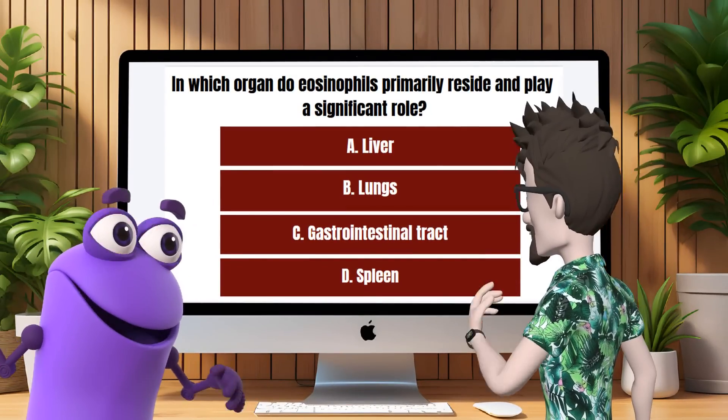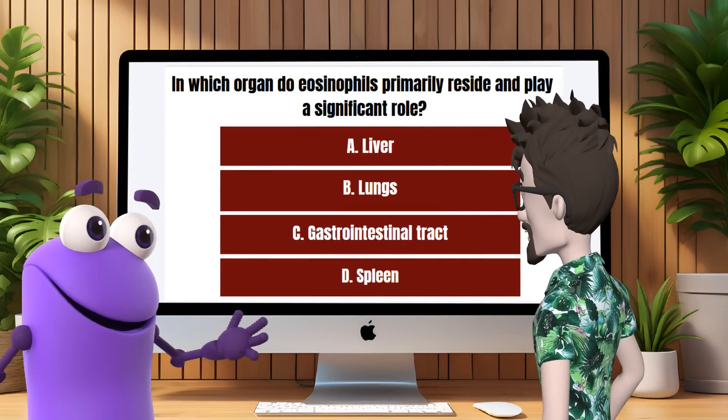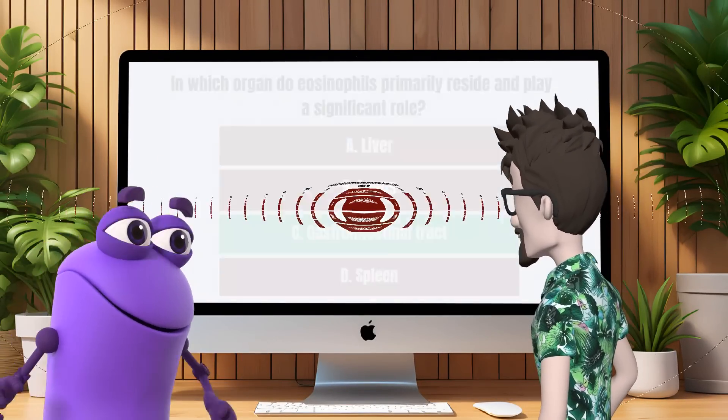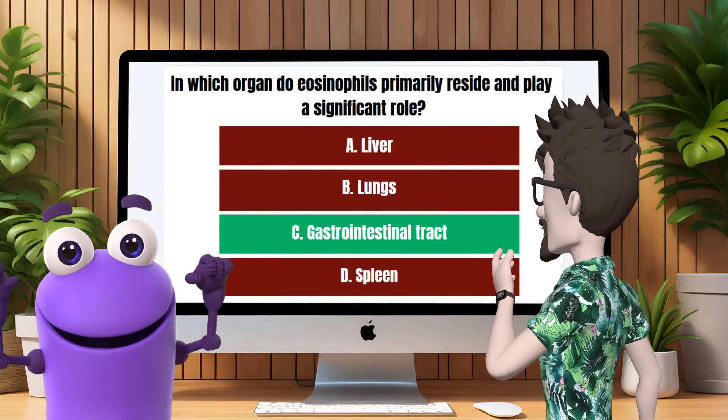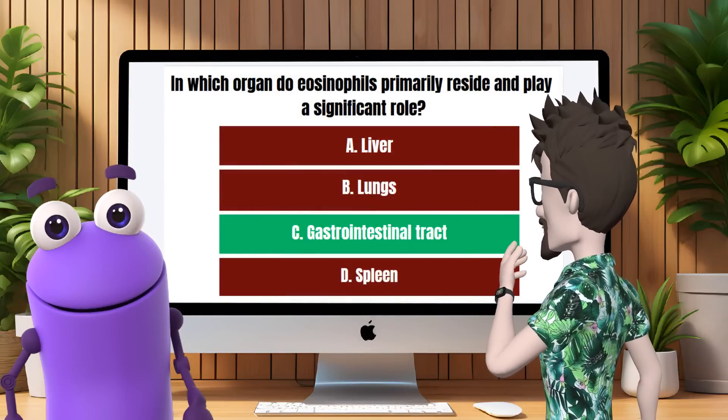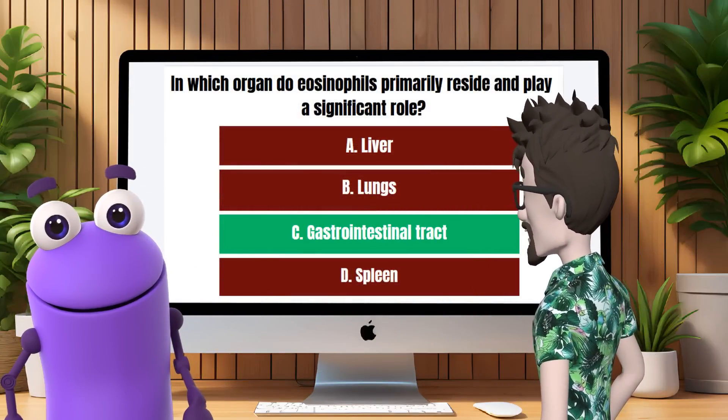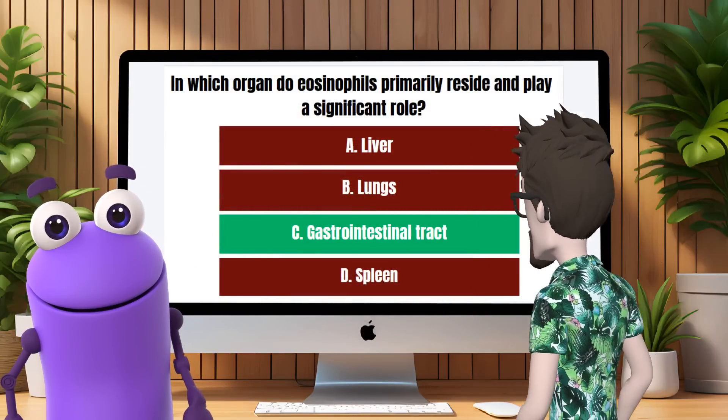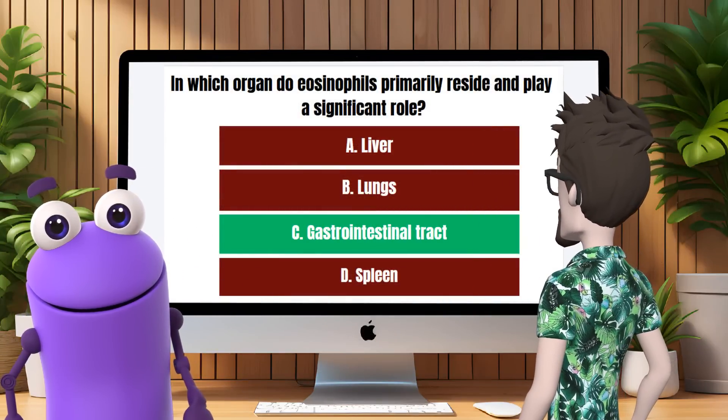Gastrointestinal tract. That's right, Cella. Eosinophils are primarily located in the gastrointestinal tract, where they help defend against infections.